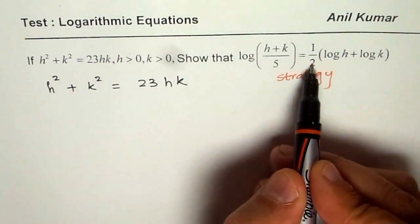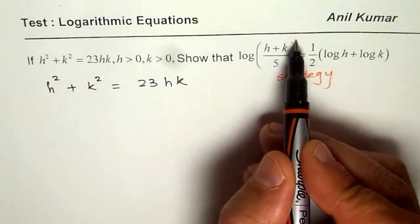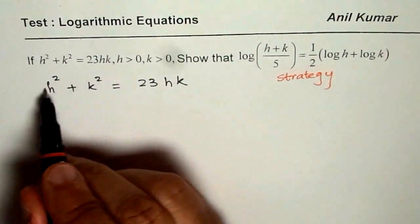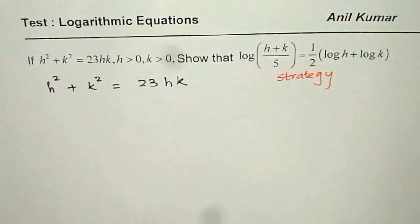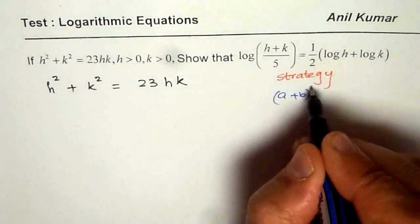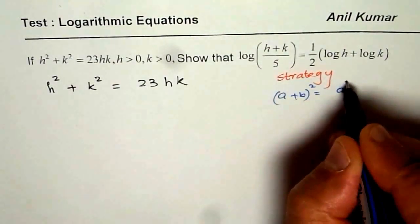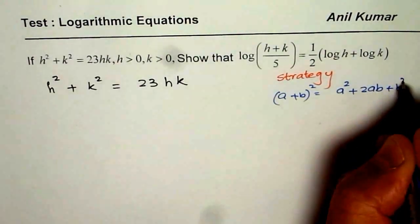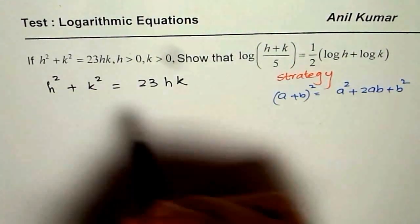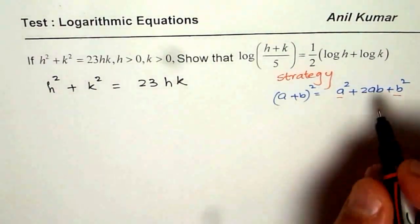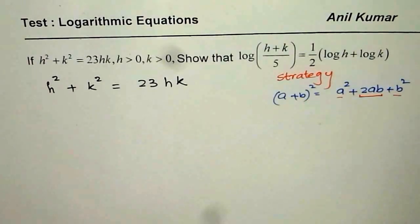So strategy is, let us go backwards. So when 2 comes there, it goes there. So we are looking for (h+k)². So how can I make this particular thing a whole square? Now, as you know, what is (a+b)²? (a+b)² is a² + 2ab + b². Now, in the given equation, we have a² and b², which is in the form of h and k. But we are missing this term, twice these two numbers.